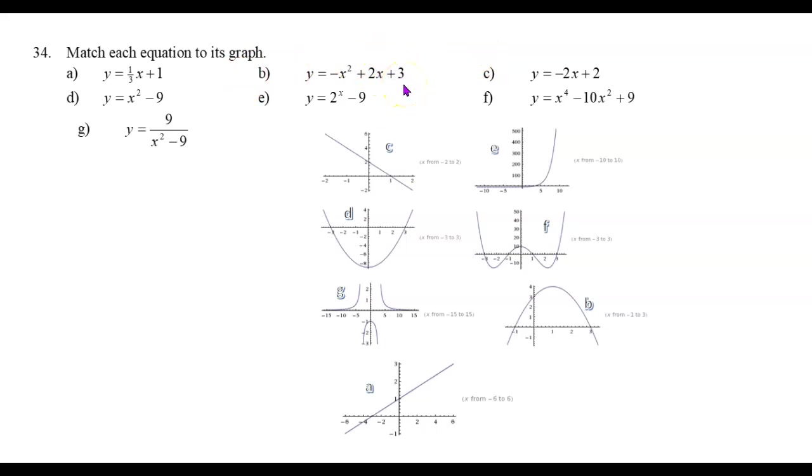Equation c is going to be a straight line with a slope of negative two and a y-intercept of positive two. Equation d is going to be another parabola, this time one that opens upward, and the y-intercept is going to be at negative nine.